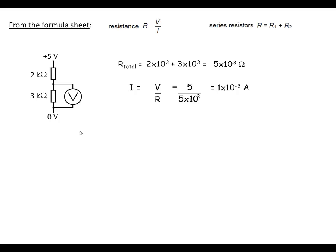The next stage, we know the current flowing through that resistor and we know the resistance. So we can do V equals IR. Substitute the numbers in — so we've got one milliamp and then we've got three kilohm — and this comes out to being three volts. So we've got three volts across this resistor.